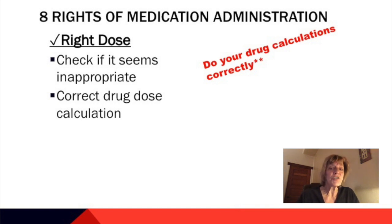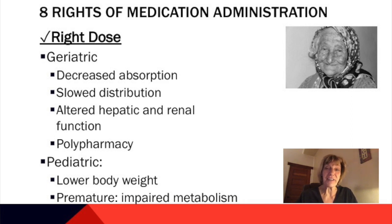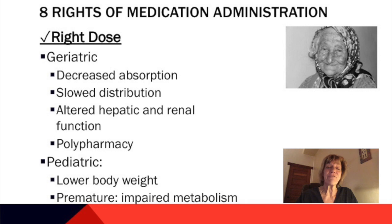An important safety practice is to have another nurse check your drug calculation with you to make sure it's correct. Also be aware of your patient population. Geriatric patients have decreased absorption, slower distribution, and may have altered hepatic or renal function, which can affect dosage. Be aware of polypharmacy as well — many geriatric patients are on five or more medications and there may be interactions.